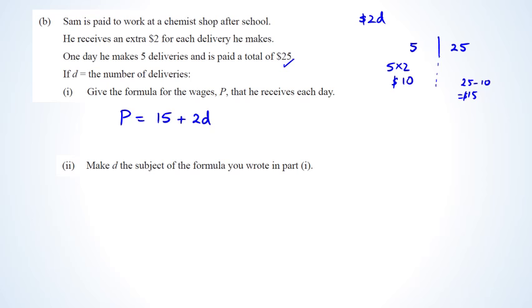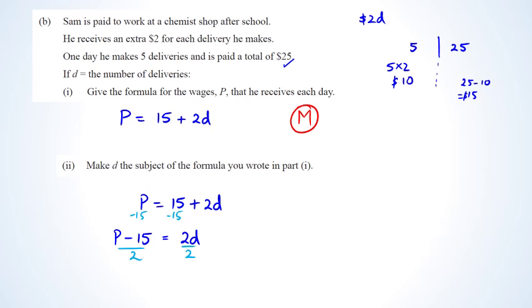Getting to this formula is a merit. For part two, make d the subject: starting from p equals 15 plus 2d, subtract 15 from both sides to get p minus 15 equals 2d, then divide both sides by 2, giving d equals (p minus 15) divided by 2. This gets you an achieved.